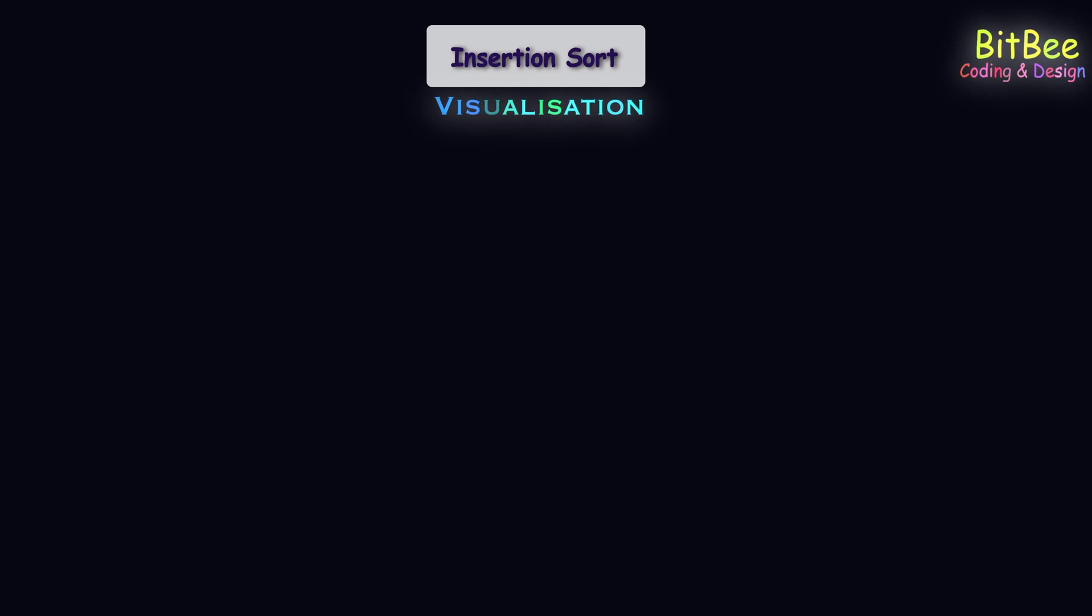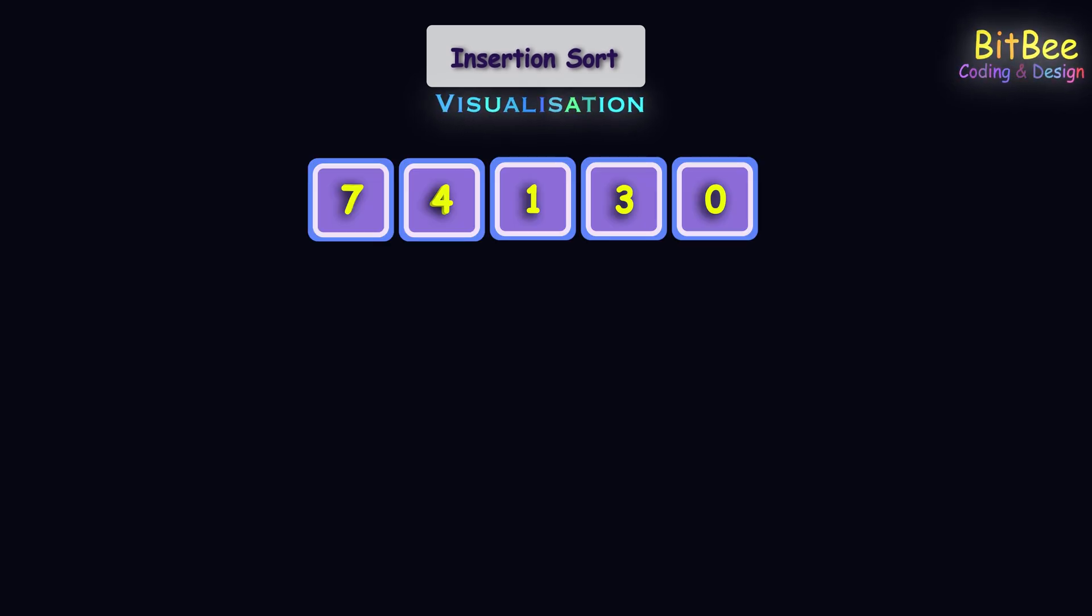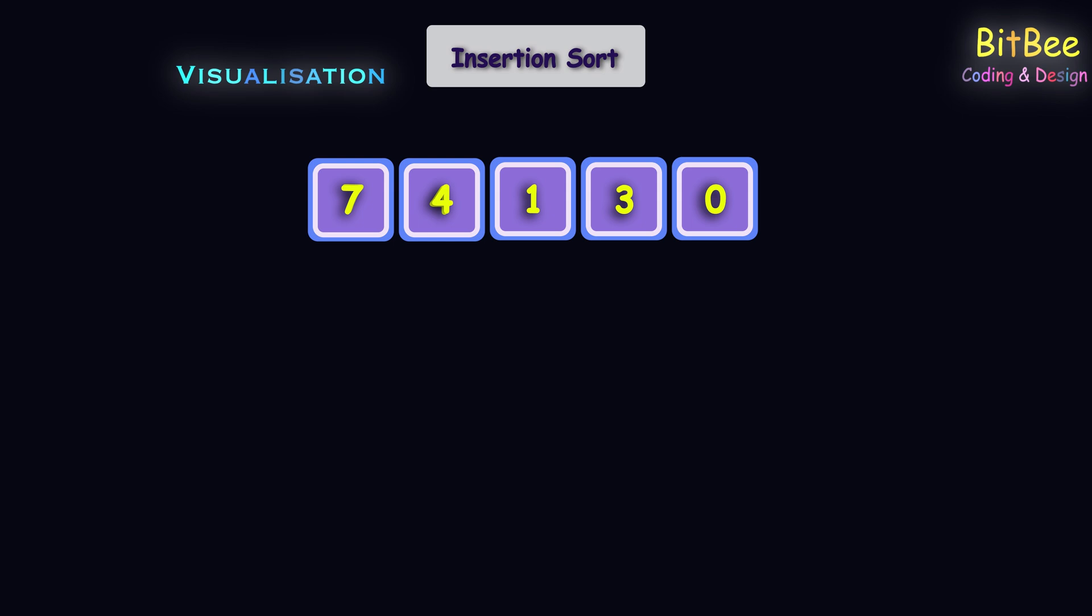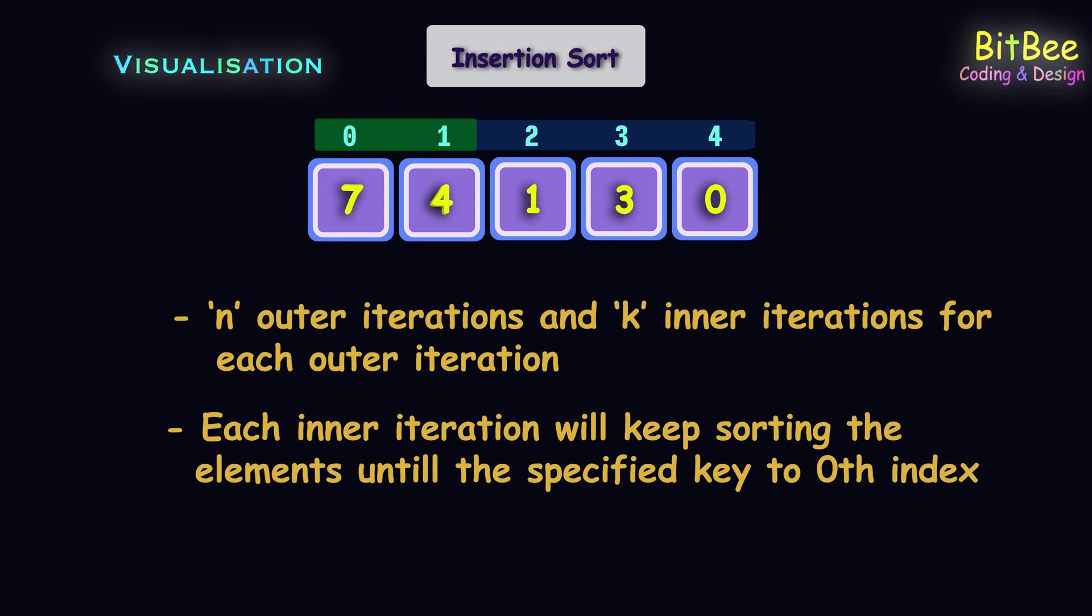Let's take one input array which is unsorted. The input array contains 7, 4, 1, 3, and 0. Let's apply insertion sort algorithm on it and sort them in ascending order. Basically insertion sort works with two nested iterations: inner and outer iterations. If our input array size is n, then it will have n outer iterations and k inner iterations where k varies from n-1 to 0. Now let's start with the algorithm.